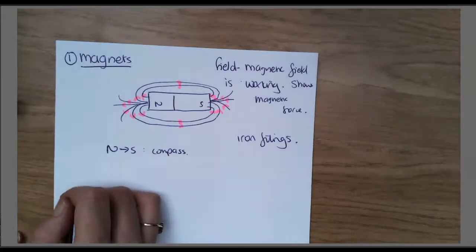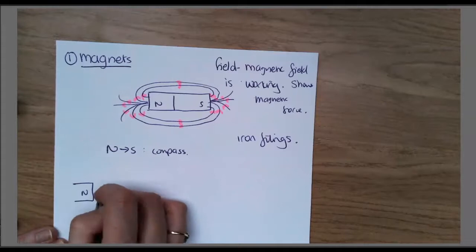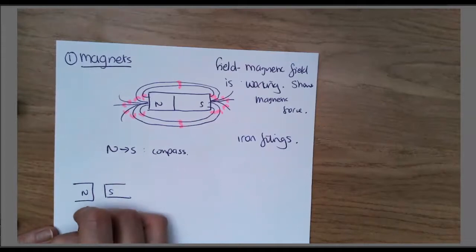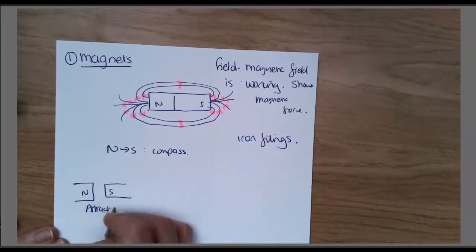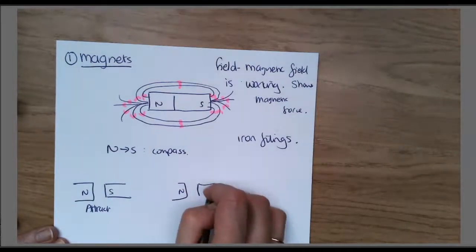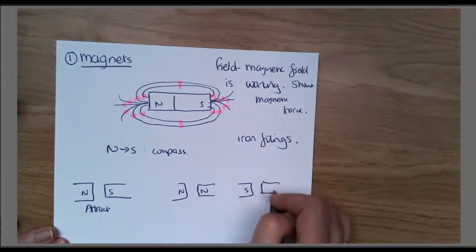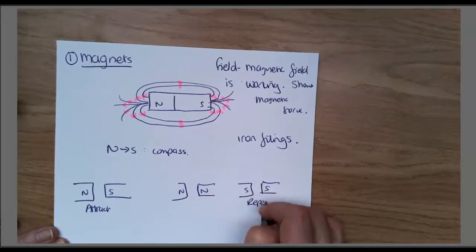If you put a north and a south pole together, they will attract. If you put a north and a north together, or a south and a south, they will repel.